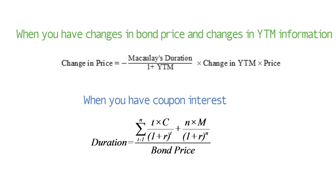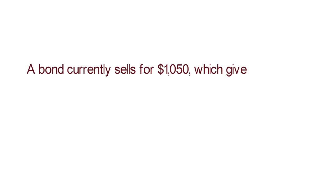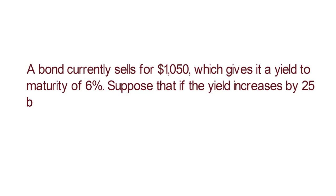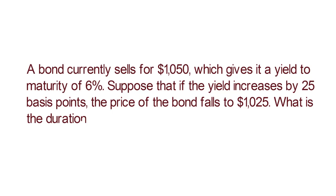A bond currently sells for 1050, which gives it a yield to maturity of 6%. Suppose that if the yield increases by 25 basis points, the price of the bond falls to 1025. What is the duration of this bond?